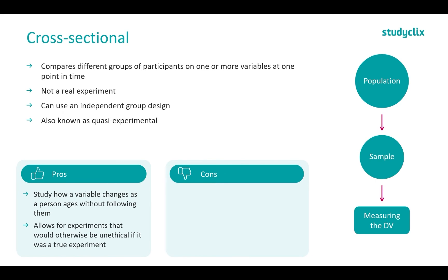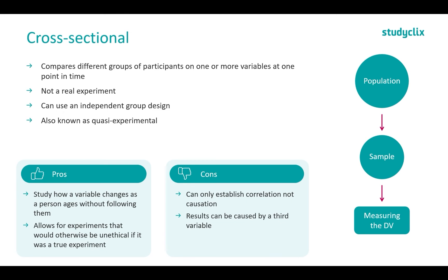A con, however, is we can only establish correlation, not causation. We can't establish a cause-and-effect relationship since we're not manipulating the variable. Our measurement could be due to multiple factors. We can say our intervention is correlated with lesser depression scores, but we can't say it causes it. Results can also be caused by a third variable. A great example is the claim that drinking coffee leads to lung cancer — it doesn't, but people who drink coffee are more likely to smoke, which leads to lung cancer. There is a correlation between coffee and lung cancer, but not a cause-and-effect relationship because a third variable is involved. So with cross-sectional designs, we need to keep in mind that a third variable could be influencing our results.